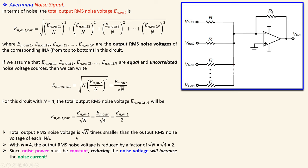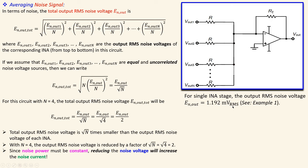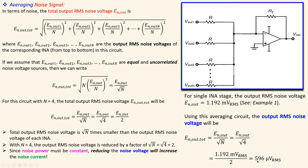For a single instrumentation amplifier from example number one in this series, we calculated the output RMS noise voltage was 1.192 mV RMS. Using this averaging circuit, the output RMS noise voltage will be two times smaller, giving 596 µV RMS. This is the improvement achieved by using averaging, and we will verify this in simulation.